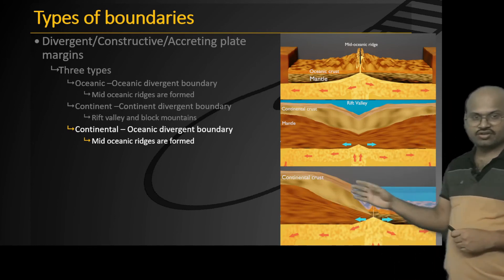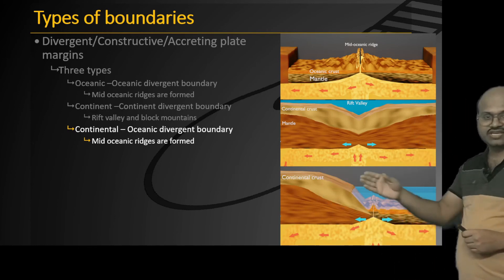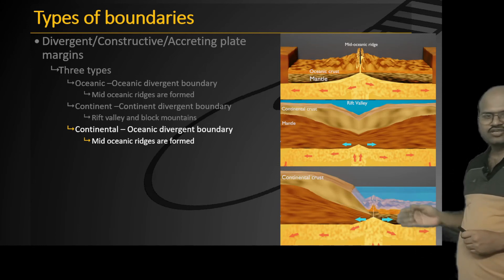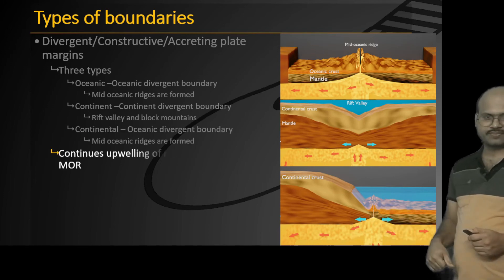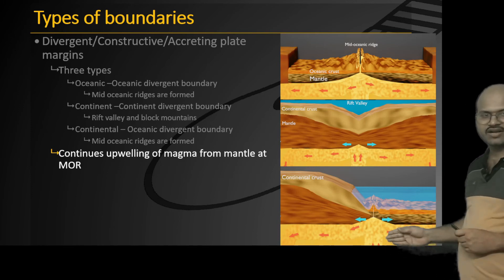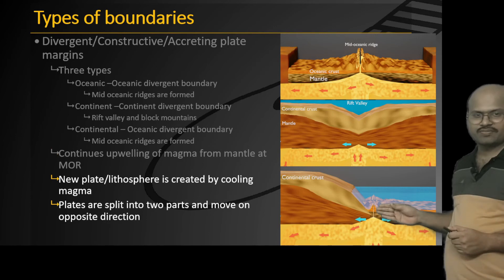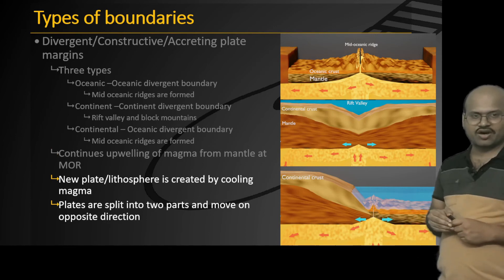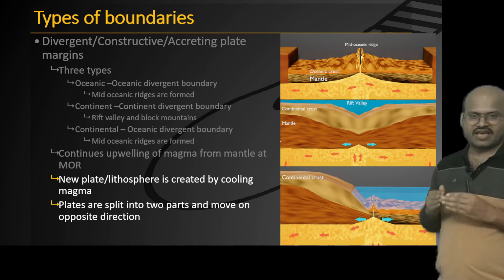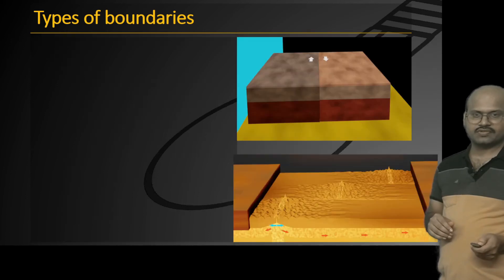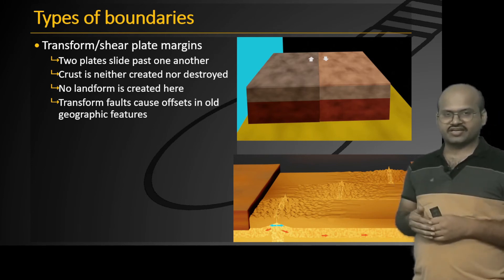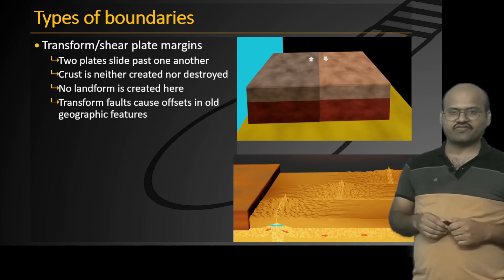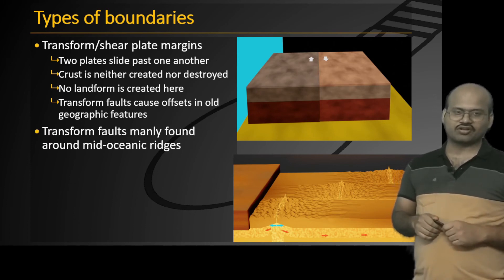The third is the continent-oceanic divergent boundary, where a continental plate and an oceanic plate move apart. As soon as this continental plate moves away, oceanic plate formation is seen, and this boundary is very soon converted into an ocean-ocean divergent boundary with mid-oceanic ridge formation. At divergent boundaries, magma comes up and solidifies to form new lithosphere — so lithosphere is created at divergent boundaries. The third type of boundary is the transform boundary, where plates move parallel to each other. No crust is created or destroyed, no volcanic activity occurs, and most transform faults form along the mid-oceanic ridges.